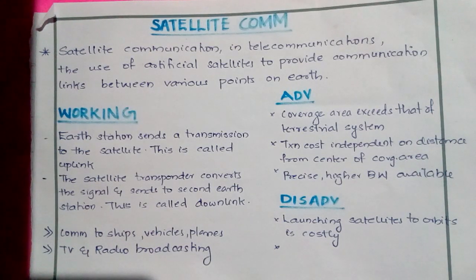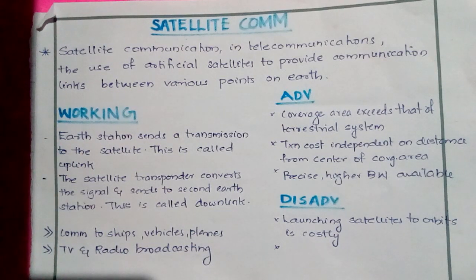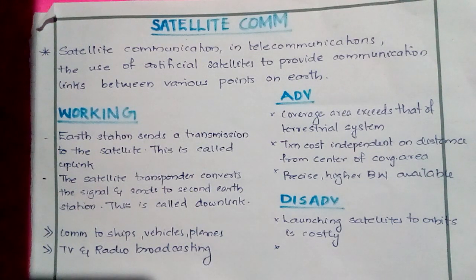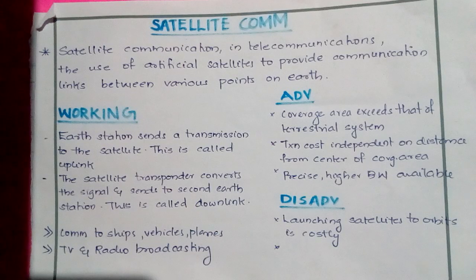Coming towards how it works: the earth station sends a transmission to the satellite — this is called the uplink. The satellite transponder converts the signal and sends it to the second earth station — this is called the downlink.